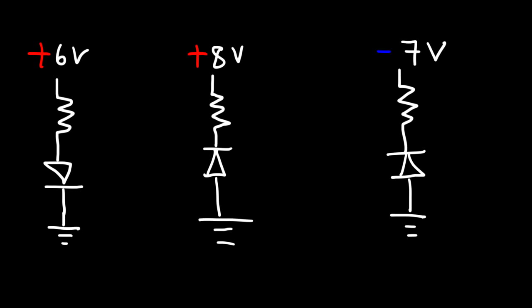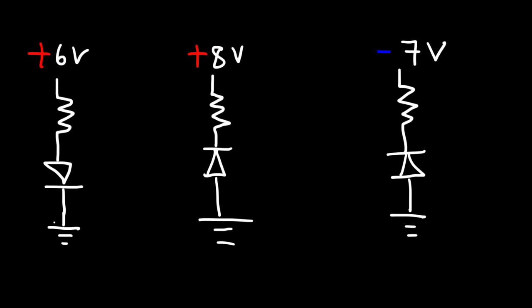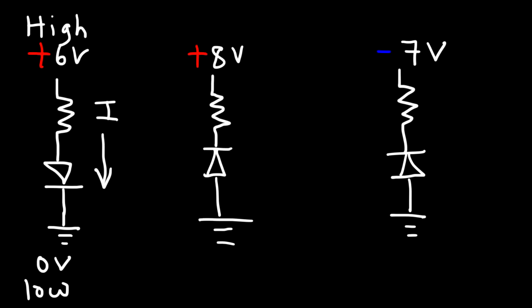Let's start with the first situation on the left with 6 volts. Whenever you see a ground symbol, the potential is 0 volts. Current flows from a high potential to a low potential, so current flows from the 6-volt source toward ground. The conventional current is flowing in the direction of the arrow symbol in the diode, so therefore this diode is on.